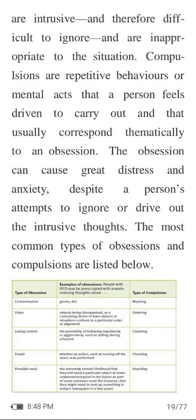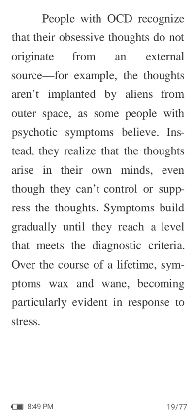The most common types of obsessions and compulsions include: contamination such as germs and dirt, with the compulsion of washing frequently; order, where objects being disorganized acts as an obsession, with the compulsion of ordering things; losing control, with counting; doubt, with checking; and possible need, with ordering. People with OCD recognize that their obsessive thoughts do not originate from an external source — for example, the thoughts aren't implanted by aliens from outer space, as some people with psychotic symptoms believe. Instead, they realize that the thoughts arise in their own minds even though they can't control or suppress them.